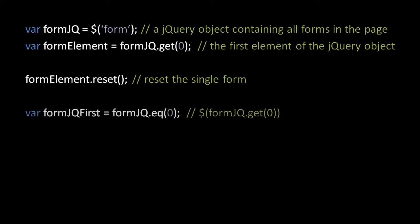Alternatively, you can use the eq() method — peculiarly named, presumably standing for 'equals,' like 'give me the element equal to this index.' It works just like get, except where get returns an actual DOM element, eq returns that DOM element wrapped in a new jQuery object. It's a pretty minor convenience, because you could simply pass the raw DOM object to the jQuery constructor yourself without much more bother.